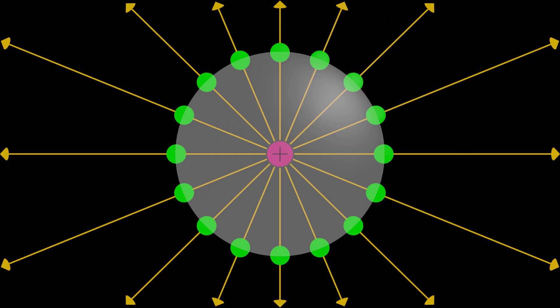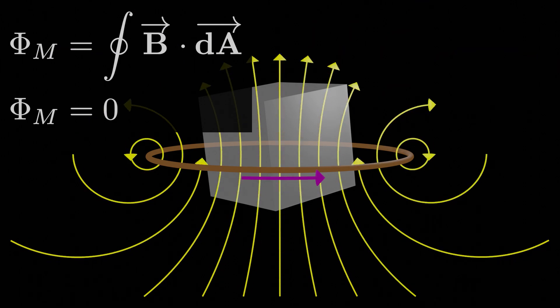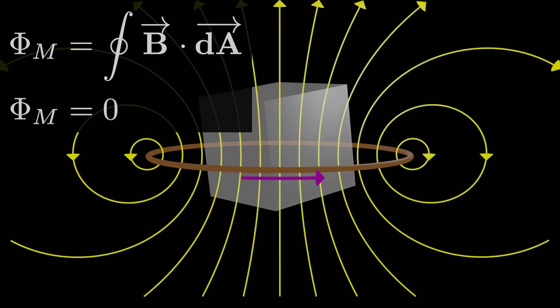The magnetic field, on the other hand, never originates or terminates anywhere. All the B field does is form closed loops, so it's impossible to construct a closed surface which has more magnetic field lines leaving it than entering it.